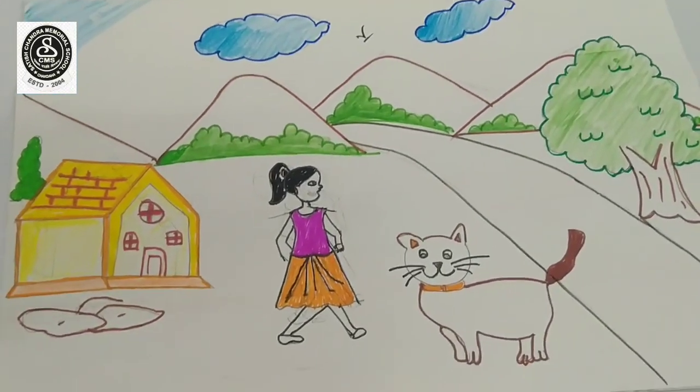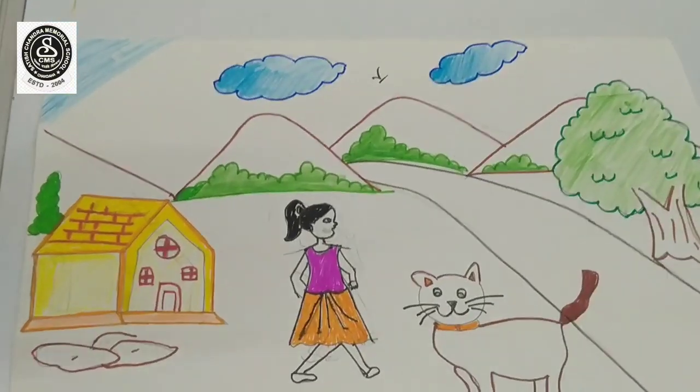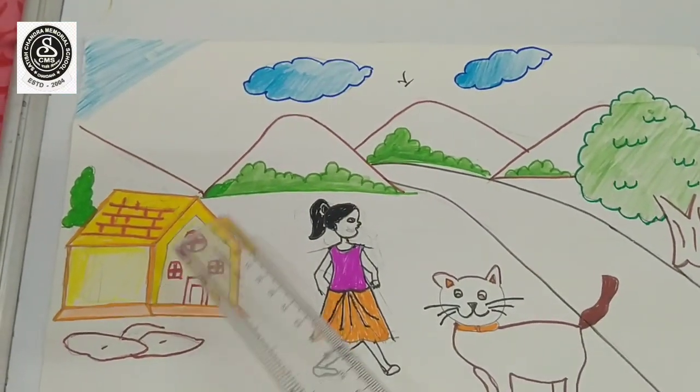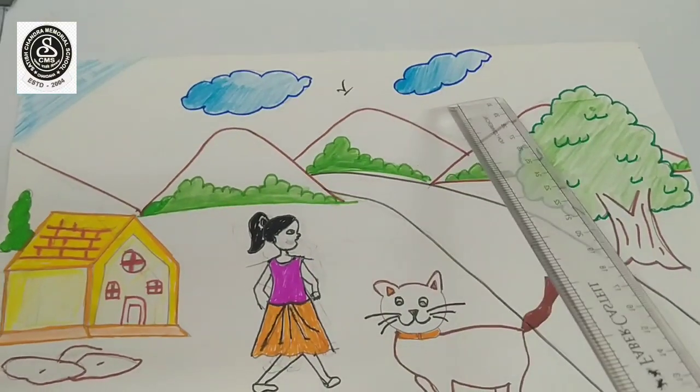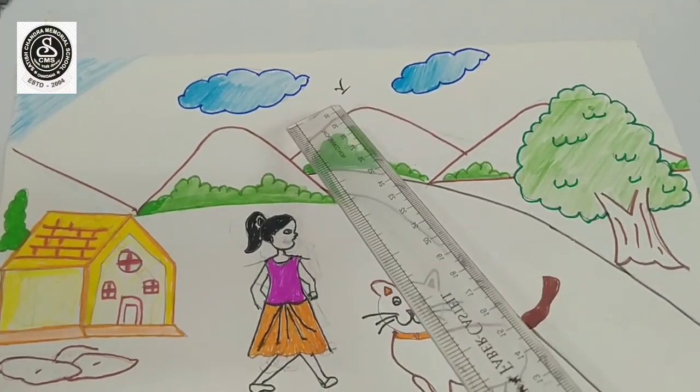Here you can see a beautiful scenery. Similarly, one house is there, one girl, one cat, tree, clouds and one bird is flying.